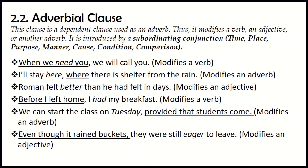Let's look at some examples. 'When we need you, we will call you.' The underlined is an adverbial clause because 'need' is a verb being modified. 'I'll stay here where there is shelter from the rain.' Here, 'here' is an adverb of place, and the underlined 'where there is shelter from the rain' modifies that adverb of place — so the underlined is an adverbial clause. 'Roman felt better than he had felt in days.' The word 'better' is an adjective being modified, and the underlined therefore becomes an adverbial clause.